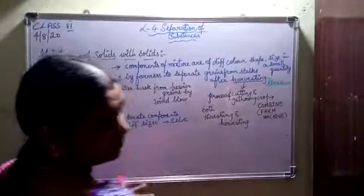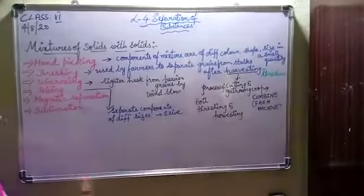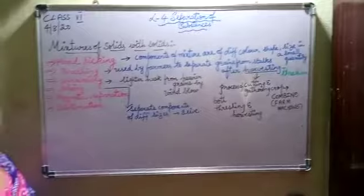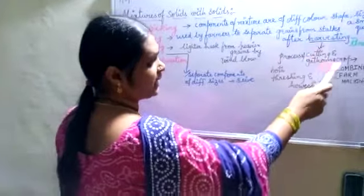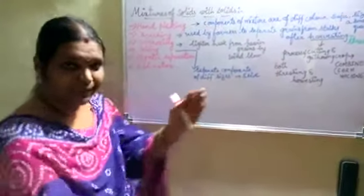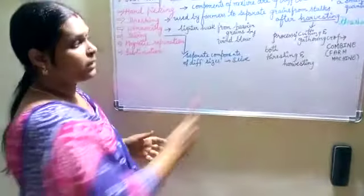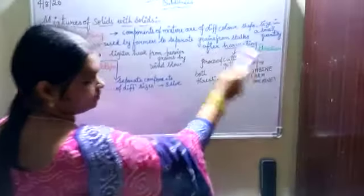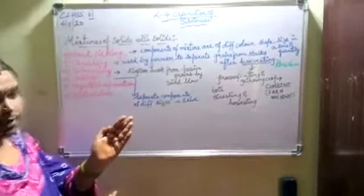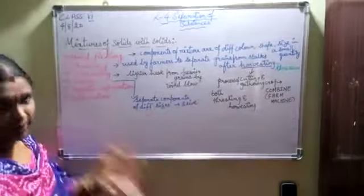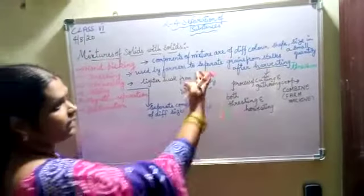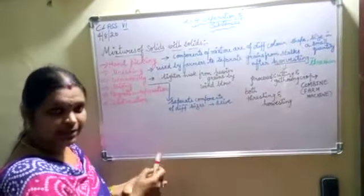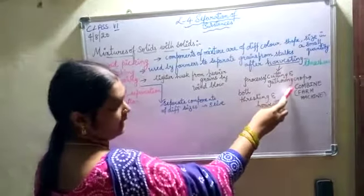The removing of grains from the stock is done by threshers. A thresher is a machine that separates the grains from the stock after harvesting the crop. The process of cutting and gathering the crop is called harvesting. After cutting and gathering, they dry it — that is harvesting. Then they separate the grains from the stock — that is threshing.